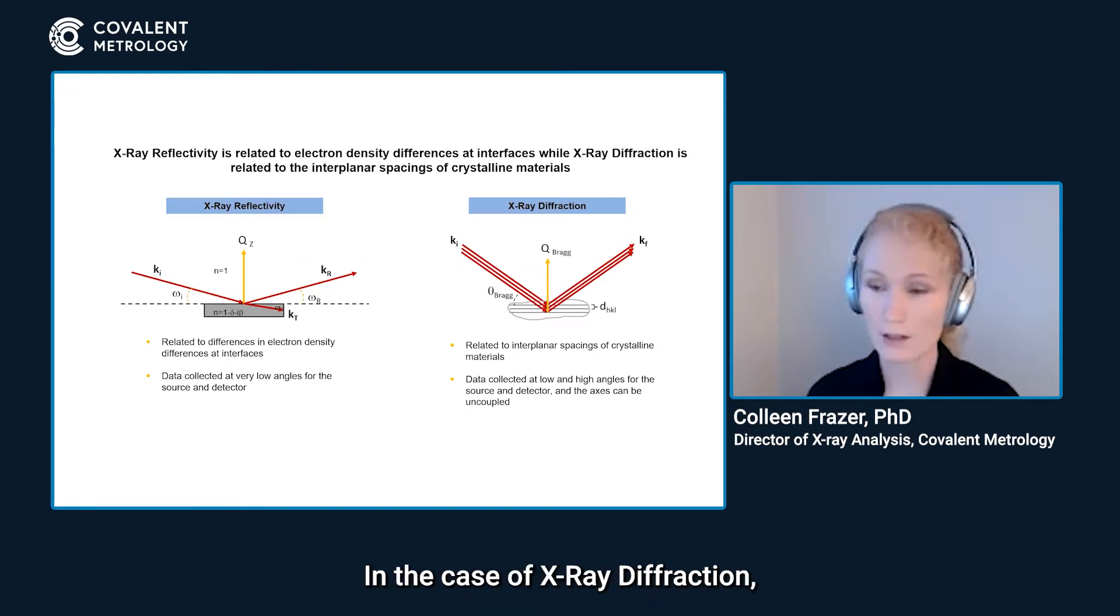In the case of x-ray diffraction, the black lines indicate the crystalline planes of a particular large grain. We have a DHKL, which is the interplanar spacing of a set of planes, the HKL indices. And the constructive interference of those beams coming back off are what we get as a measured beam.